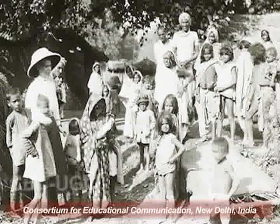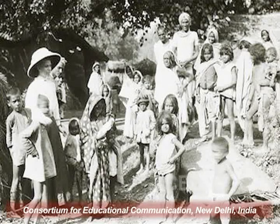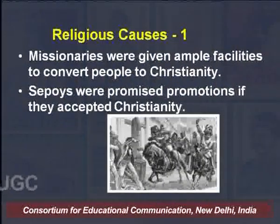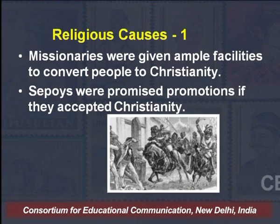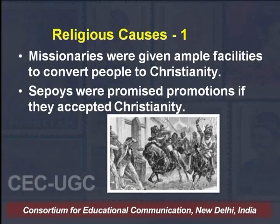One can see the eyewitness account of the revolt of 1857 by a traveller who came to North India from Maharashtra. Apart from the political and economic causes discussed earlier, the religious causes were also very important. The missionaries, who were given facilities in the Charter Act of 1813, were being allowed to come to India, and they positioned themselves near Calcutta and in other regions of India as well. The focus was to convert as many Indians as possible to Christianity, and sepoys were promised promotions if they accepted Christianity.